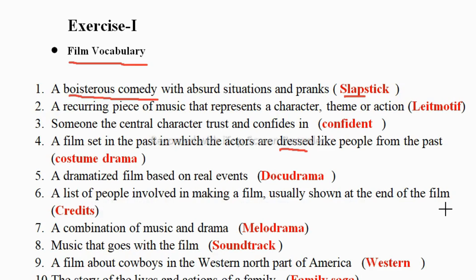Next: a list of people involved in making a film, usually shown at the end of the film — these are called credits. Credits are publicly acknowledging contributors and their role in the production of the movie. The list of all people involved in that movie is called credits — they are giving credit to them.